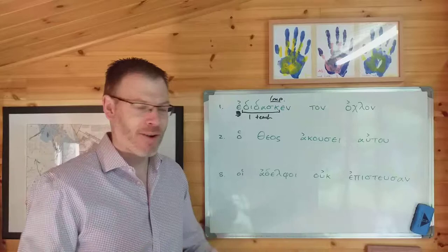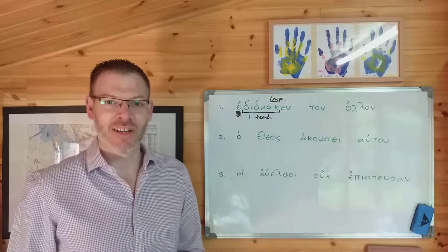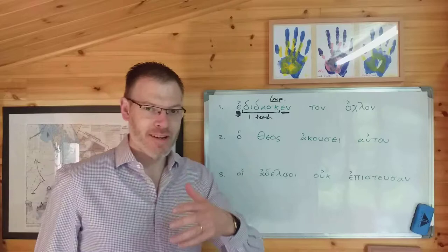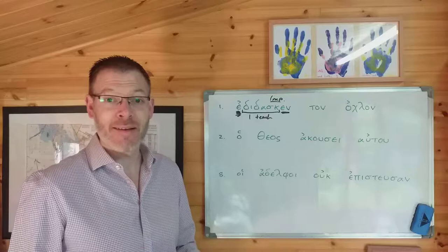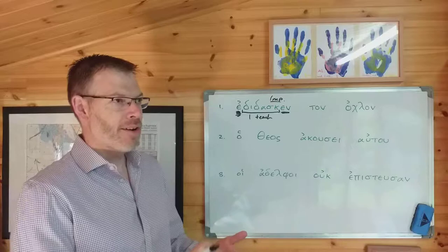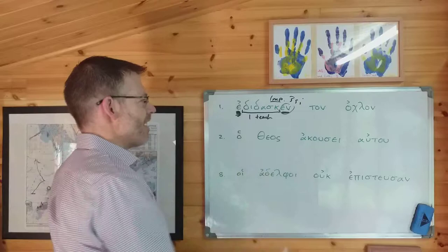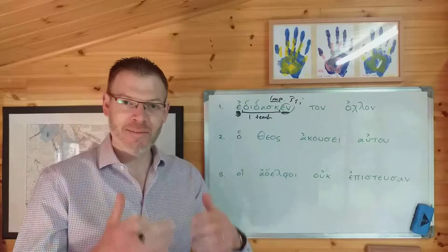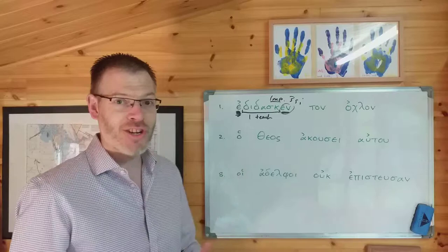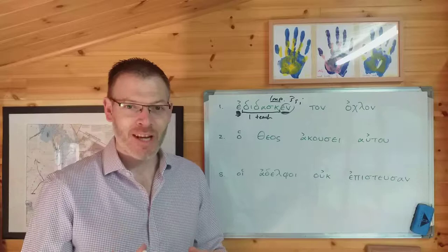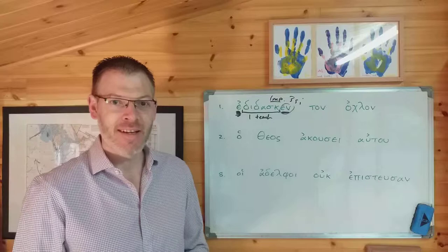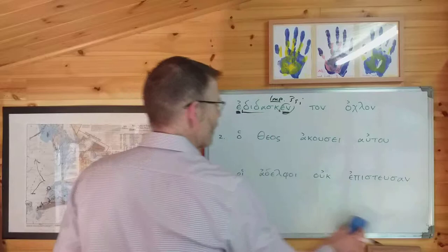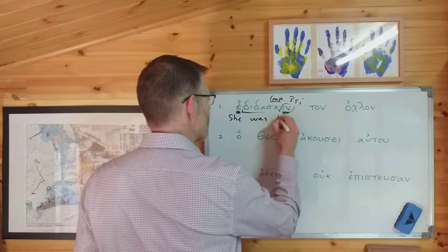So you've done the stem, you've done the epsilon augment and sigma suffix. Next you look at the ending. The ending is -n. You go back in your mind to the paradigm verb luo. In the imperfect: eluon, elues, eluen, eluomen, eluete, eluon. So on, s, n — this is third person singular, meaning he, she, or it. Imperfect, so in the past, extended in time. The simple gloss for an imperfect is, in this case, 'she was teaching.'